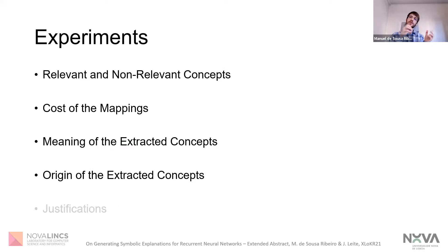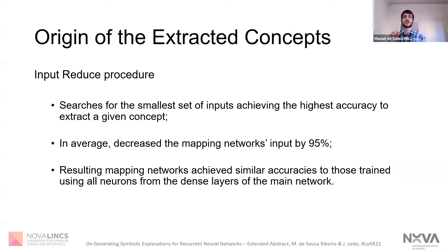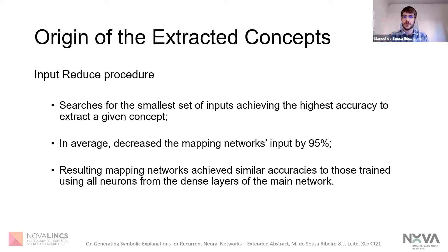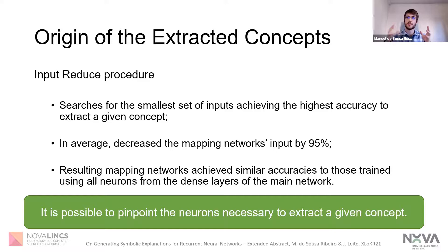We then wondered about the origin of these concepts — whether we could pinpoint exactly which neurons of a neural network are necessary to extract a given concept. To investigate this, we developed an input-reduced procedure that searches for the smallest set of inputs achieving the highest accuracy possible to extract a given concept. Through this procedure, we were able to, on average, reduce the amount of inputs to our mapping networks by 95% while keeping the same or similar accuracy scores. So we were able to exactly pinpoint which neurons were necessary to extract a given concept.